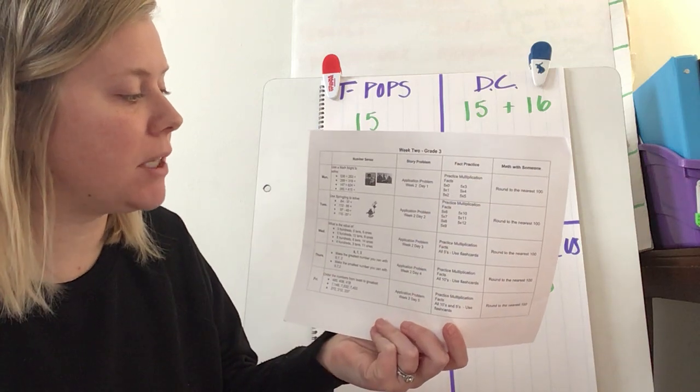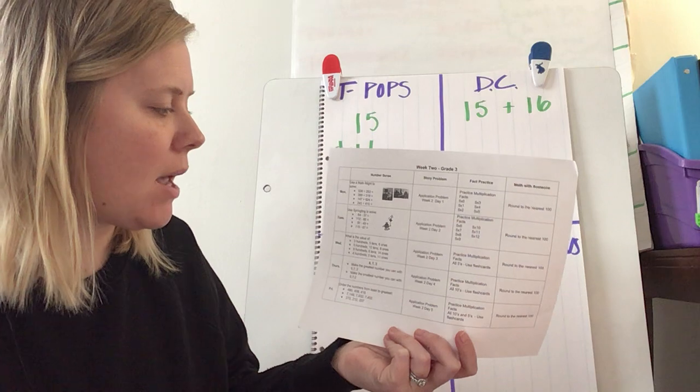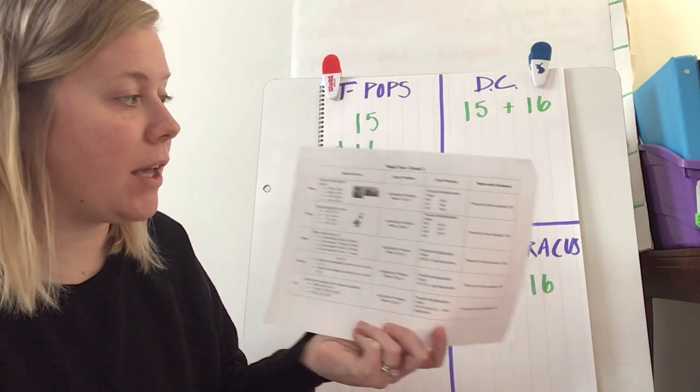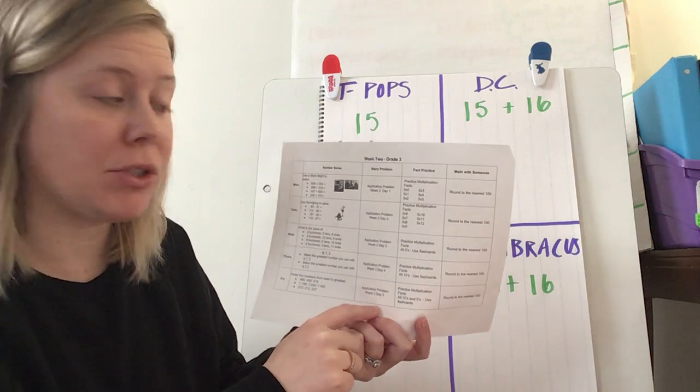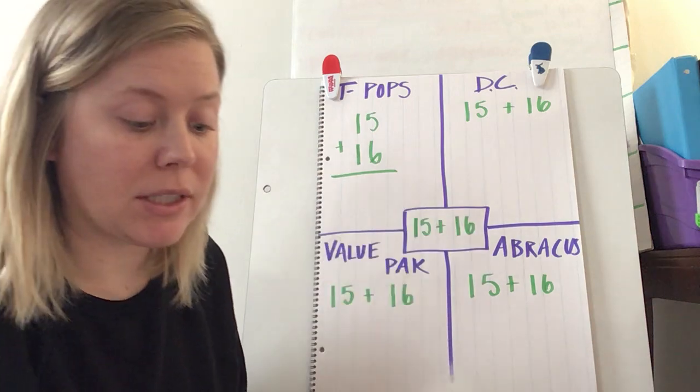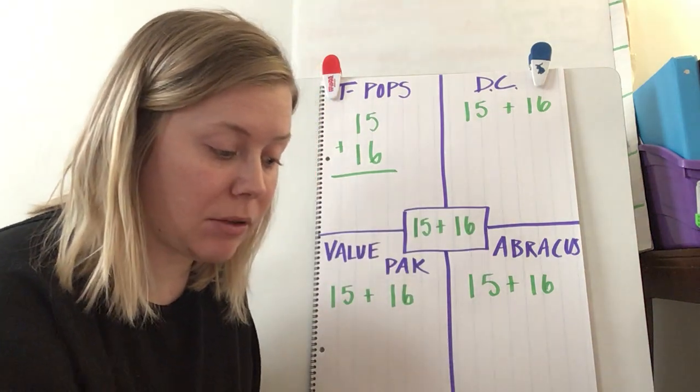Monday it says use a math might to solve, Tuesday is springling with subtraction, and then there is some place value still on here as well. You have your journal problem to do every day, your multiplication facts, and then your game is still rounding to the nearest hundred like you did last week.